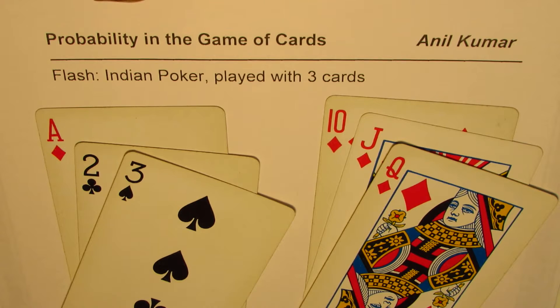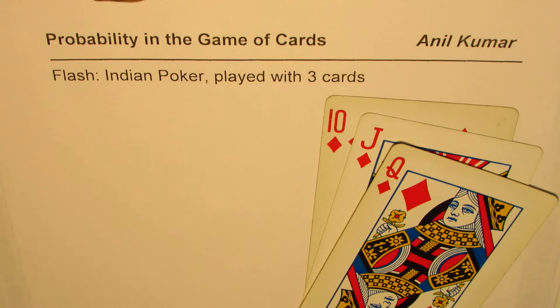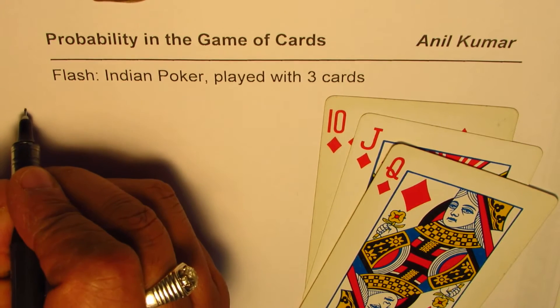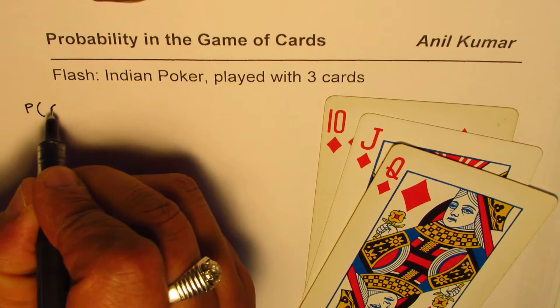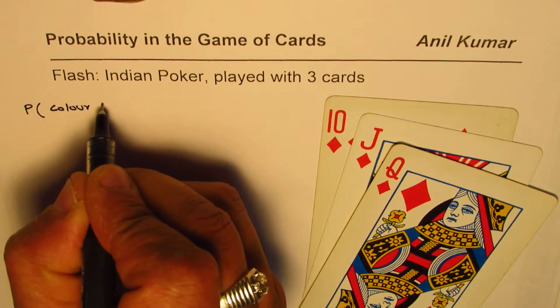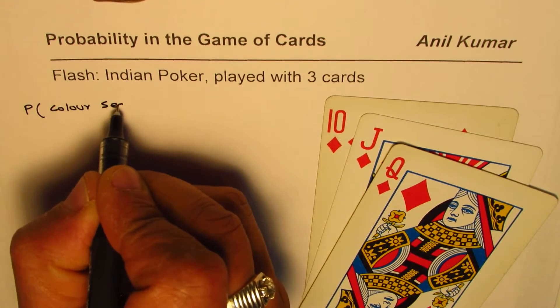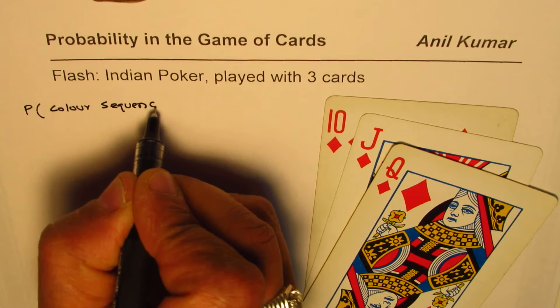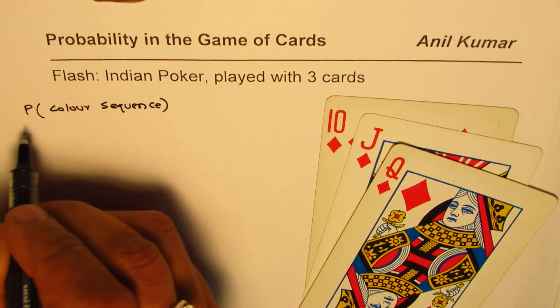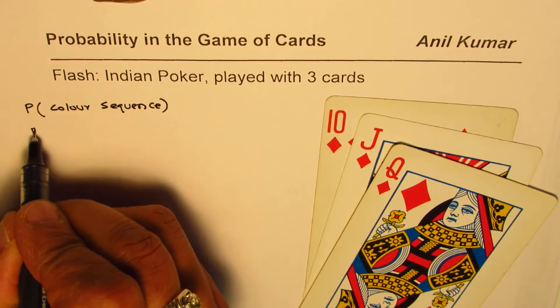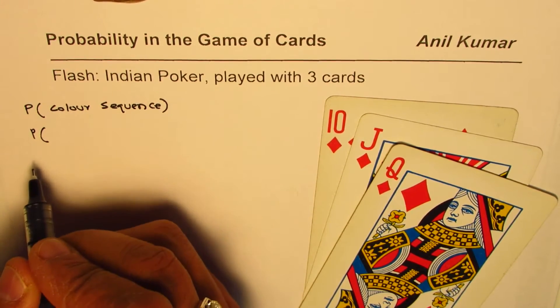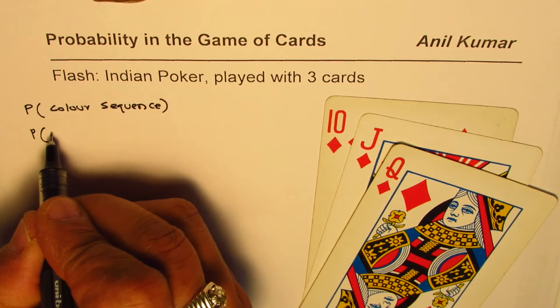Let us see what is the probability of such sequences. To start with, let's take up an example with the color sequence — we will try to find the probability of a color sequence. You could also call this the probability of a straight flush.